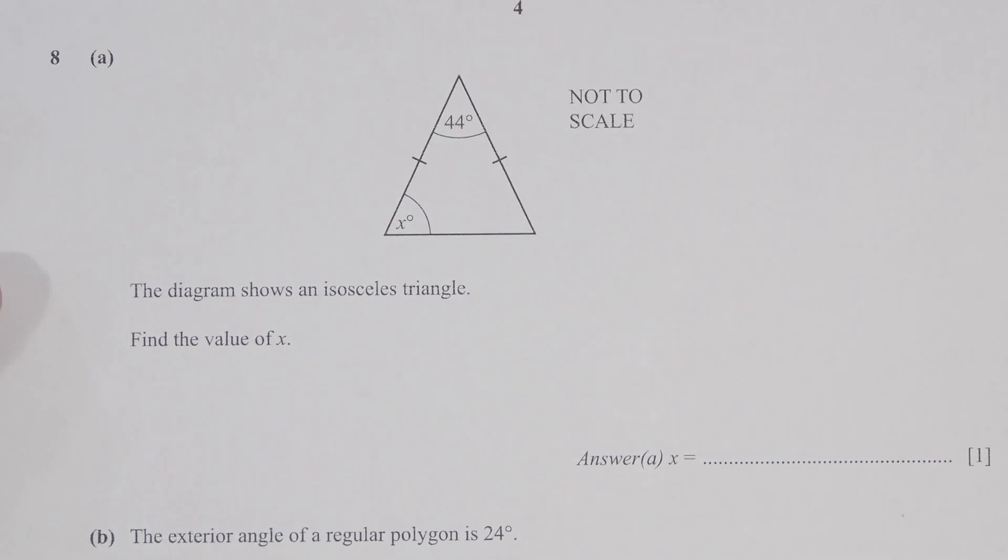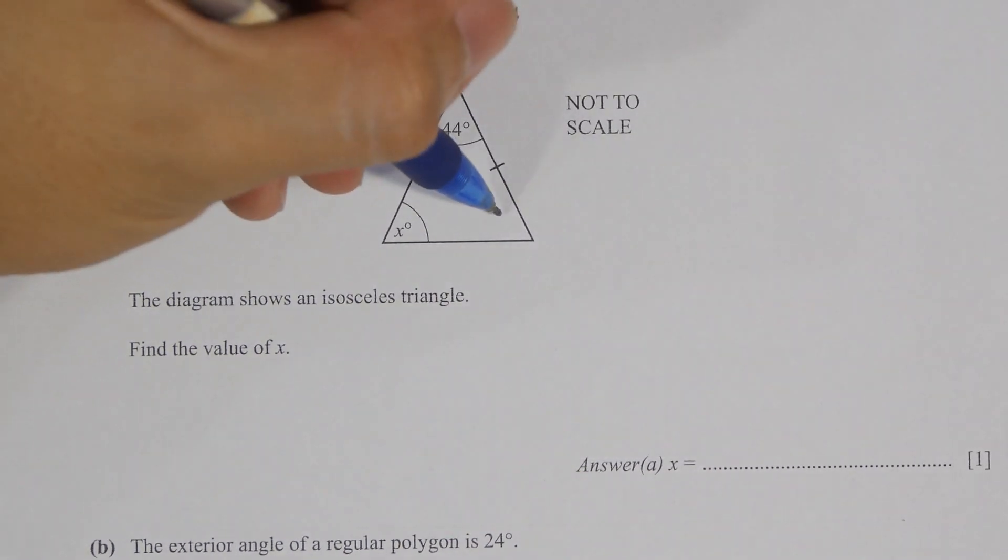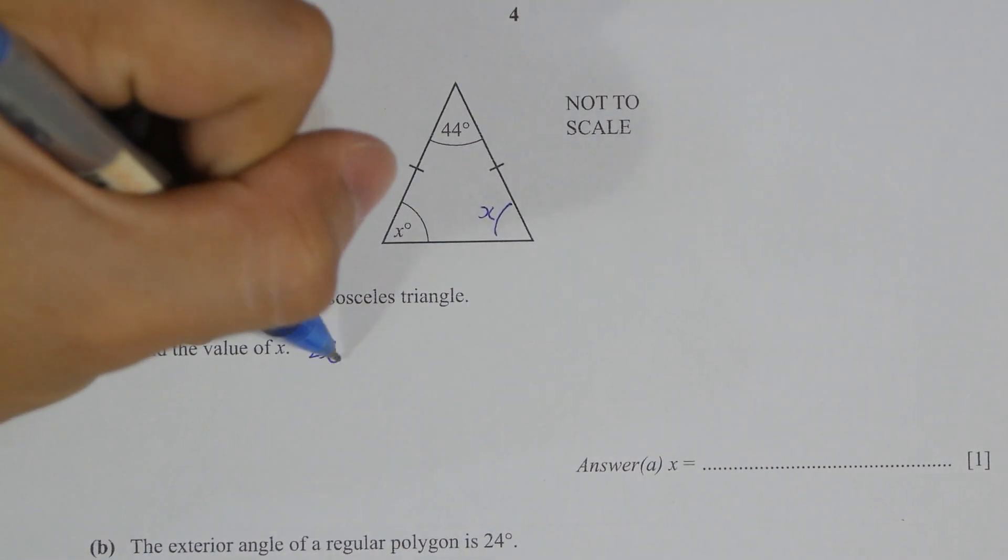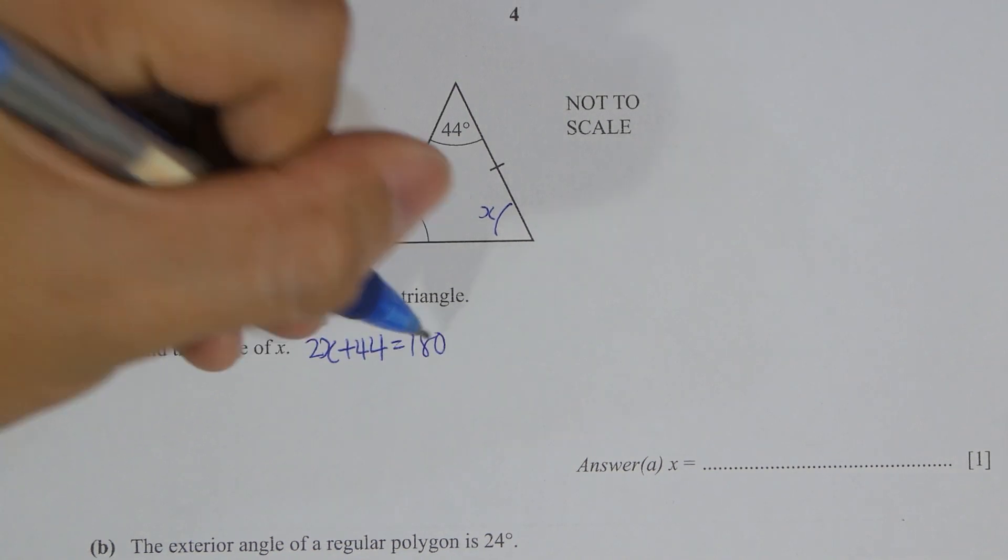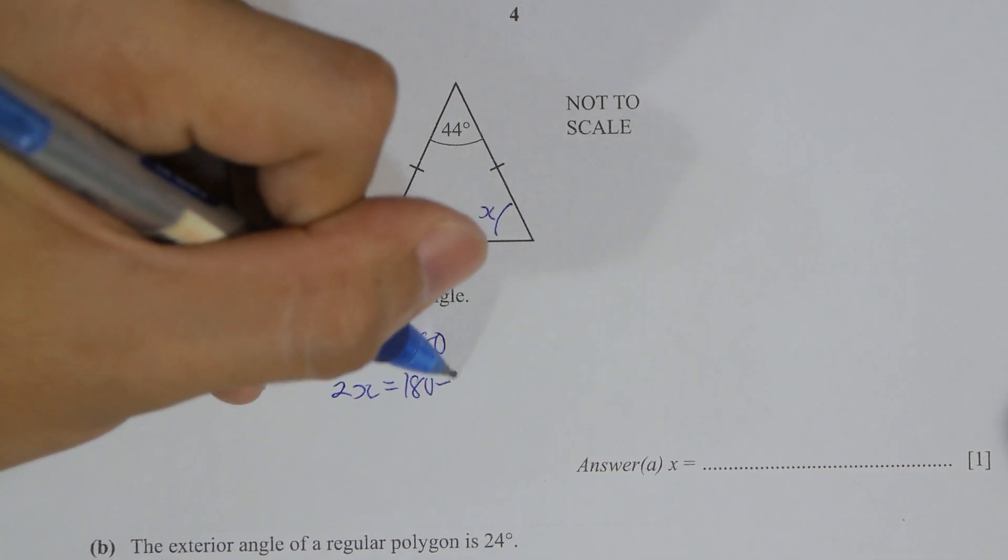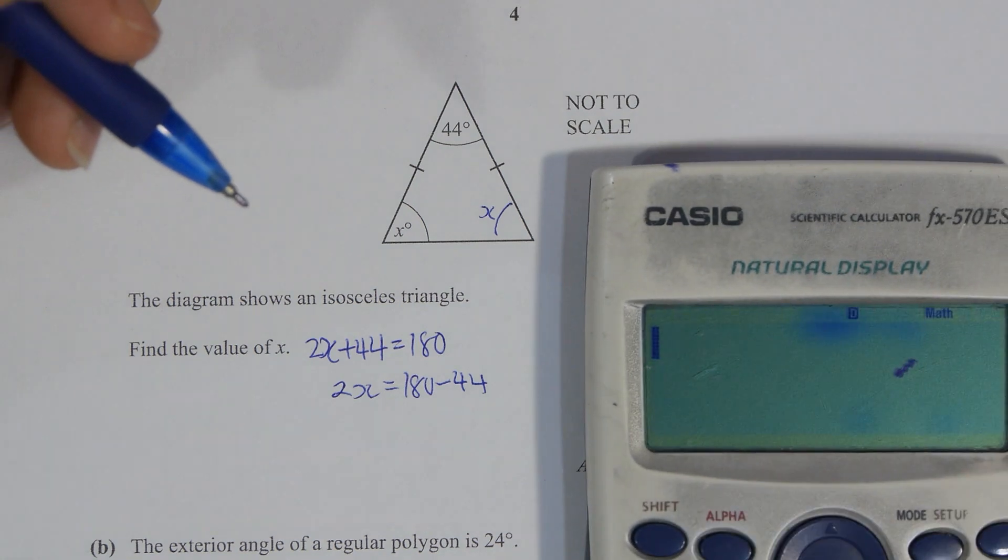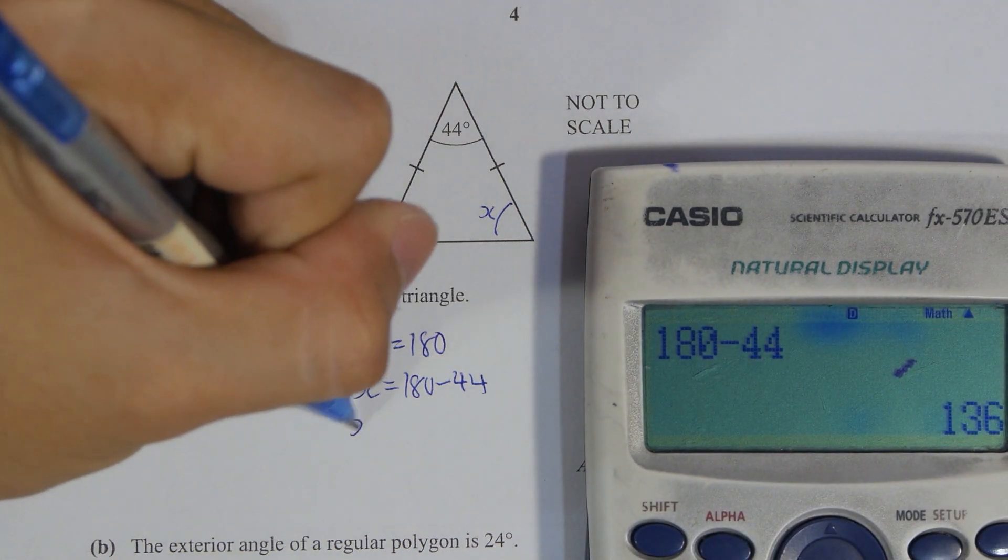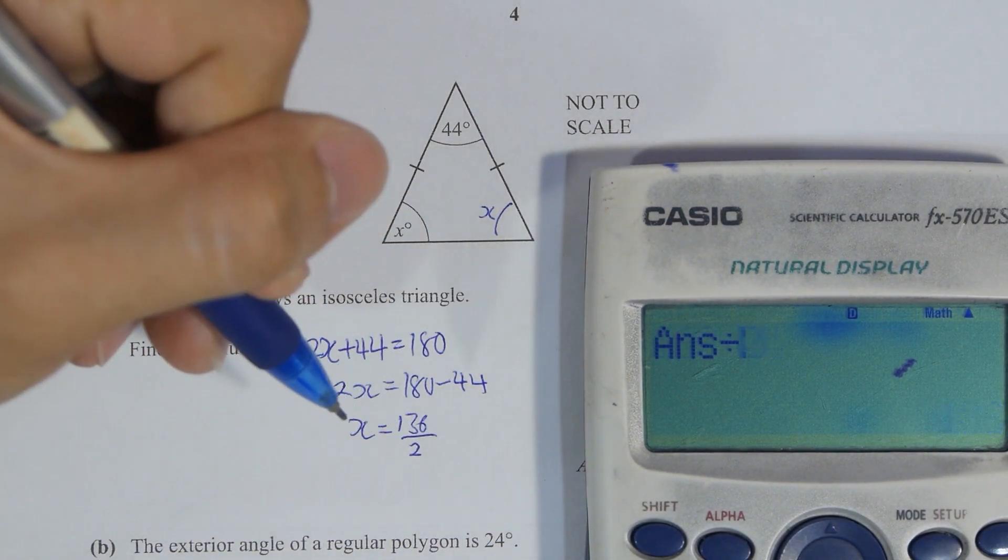Question eight. Keyword here isosceles triangle, which means that the other angle that is unknown is actually x. So 2x plus 44 equals to 180. After you run the calculation x equals to 68.